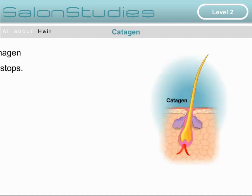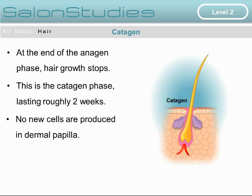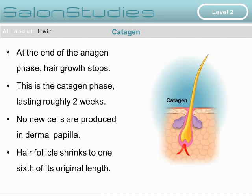The catagen phase. At the end of the anagen phase, hair growth stops. This is the catagen phase and it lasts roughly two weeks. No new cells are produced in the dermal papilla, and the hair follicle shrinks to one-sixth of its original length.